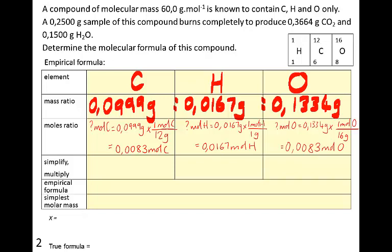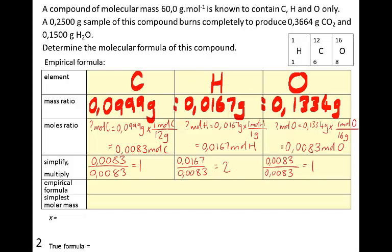Next we simplify — and if necessary multiply — if we don't get a whole number ratio immediately. We take the smallest of the numbers. The smallest here is 0.0083. Dividing through: 0.0083 divided by itself is 1; 0.0167 divided by 0.0083 is 2.01, rounded to 2 (rounding and experimental error account for the difference); and the oxygen also gives 1. We don't need to multiply since simplifying already gives a whole number ratio.